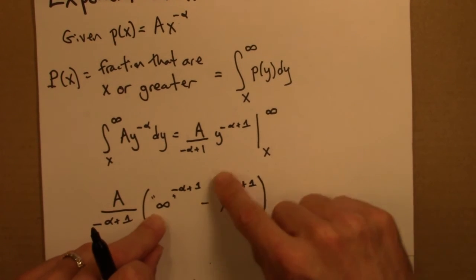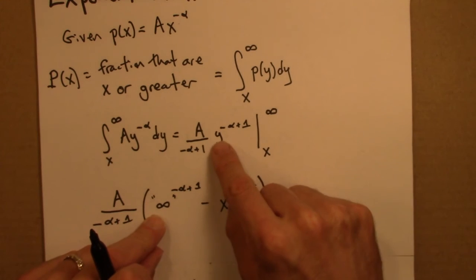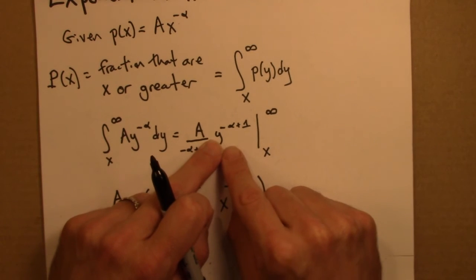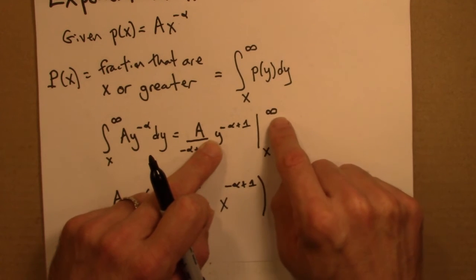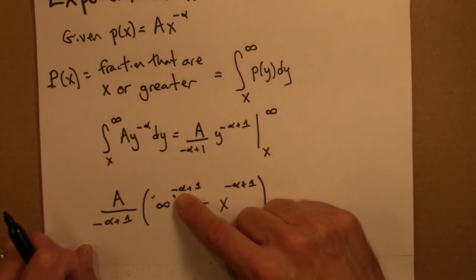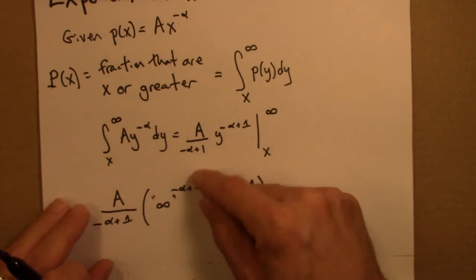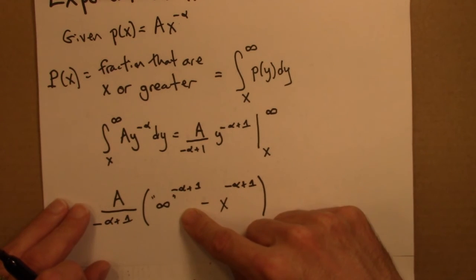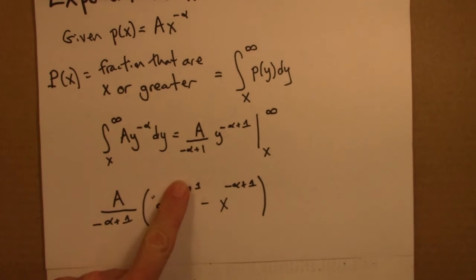But what this means is we want to plug in for y and see what happens to this expression as y gets larger and larger, closer and closer to infinity, grows without bound. And as long as alpha is greater than 1, then the overall exponent will be negative. This will be 1 over something, and this term is going to go to 0. So that term is gone.